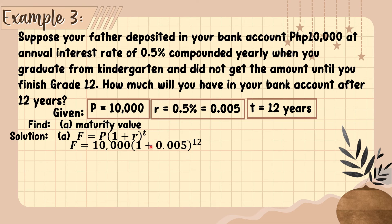Add what's in the parenthesis. We have 10,000 times 1.005 raised to 12. 1.005 times itself 12 times because the exponent is 12, we will have the answer 1.061677 and so on.